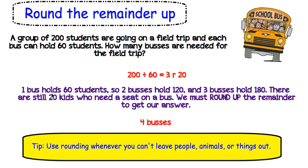So a good tip for rounding the remainder up: you are going to use rounding whenever you can't leave people, animals, or things out. In this case, we couldn't leave those 20 kids out. So we needed to round the remainder up.